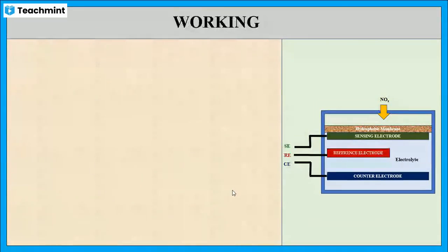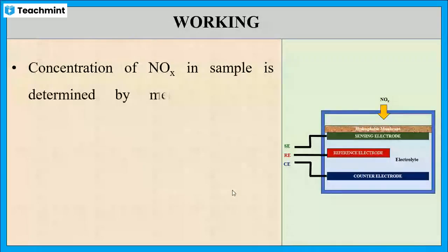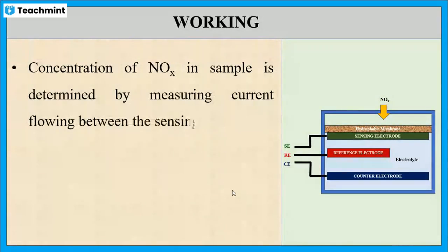By measuring the current flowing between the sensing electrode and the counter electrode, the concentration of oxides of nitrogen can be determined.